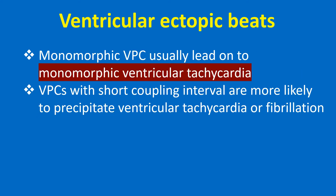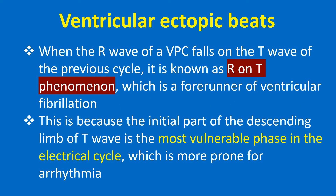Monomorphic VPCs usually lead on to monomorphic ventricular tachycardia. VPCs with short coupling interval are more likely to precipitate ventricular tachycardia or fibrillation. When the R wave of a VPC falls on the T wave of the previous cycle, it is known as the R-on-T phenomenon, which is a forerunner of ventricular fibrillation.